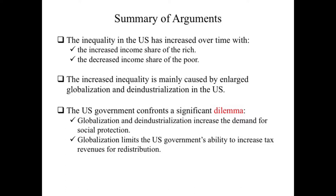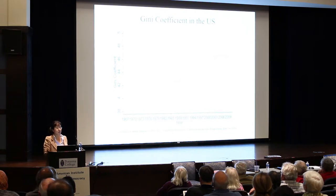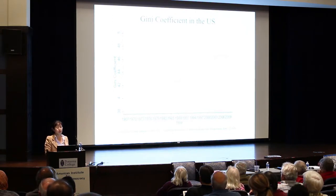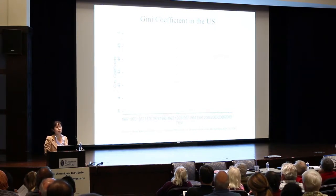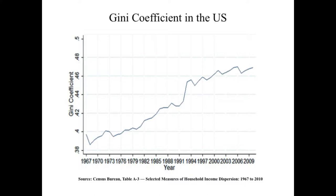I'm going to start with the trend of inequality in the United States. This graph shows the Gini coefficients in the United States. The Gini coefficient shows the inequality in the overall society. It ranges from 0 to 1, where 0 means a totally equal society and 1 means a totally unequal society. The Gini coefficient in the United States back in 1967 was about 0.4, but it has increased incrementally over time. In 2009 it's about 0.46 — almost a 10% increase.